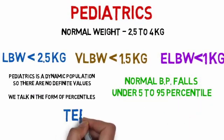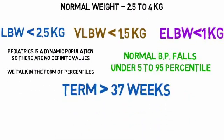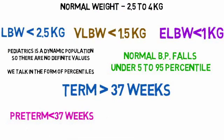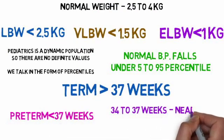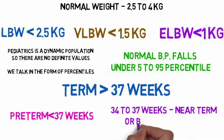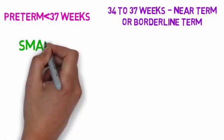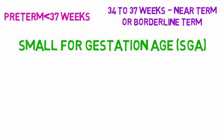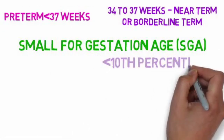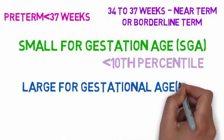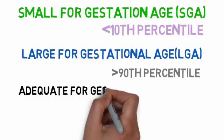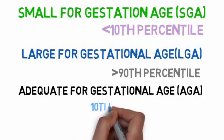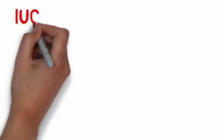Term gestation is greater than 37 weeks. Pre-term is less than 37 weeks. 34 to 37 weeks is called near term or borderline term. Small for gestational age is less than the 10th percentile. Large for gestational age is greater than the 90th percentile. Adequate for gestational age falls between the 10th to 90th percentile.